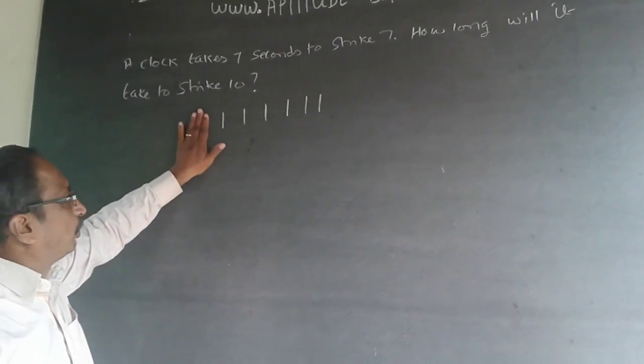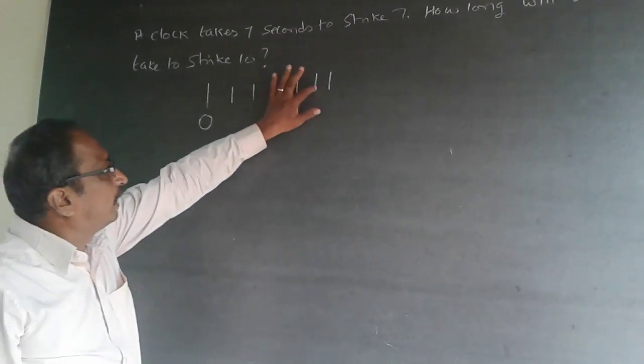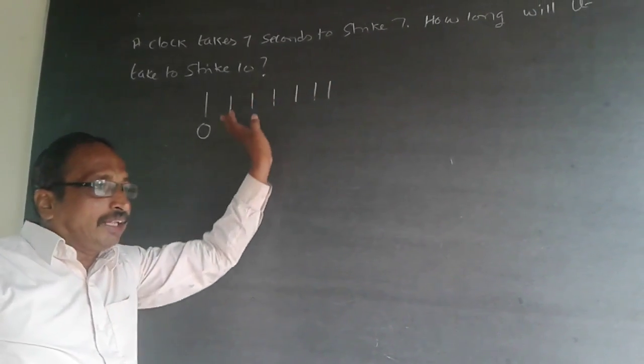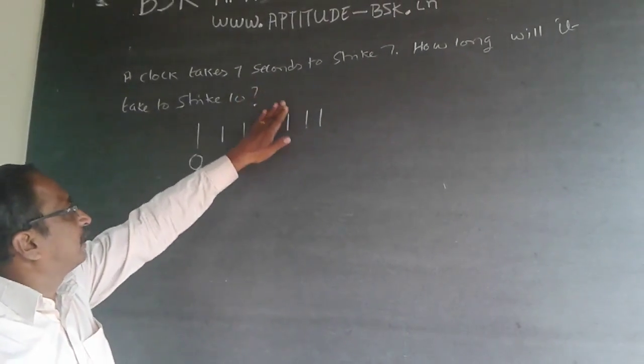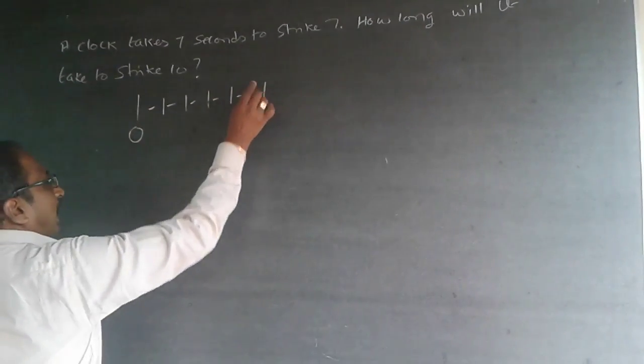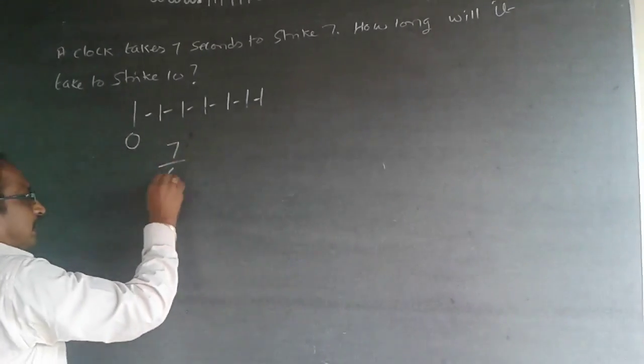Here the time gap will be 0, 1, 2, 3, 4, 5, 6. After this first one, it is striking for 6 more times. For striking this 6 times, the time taken is 7 seconds, so there will be 6 gaps. The time will be the same, so for each gap, the time taken is 7 by 6 seconds.